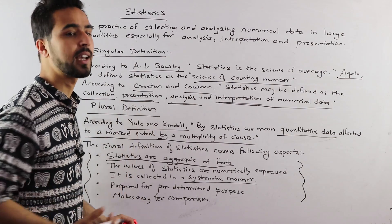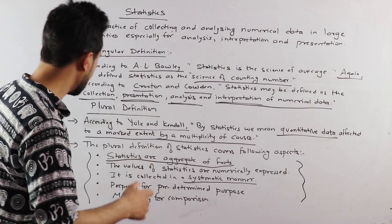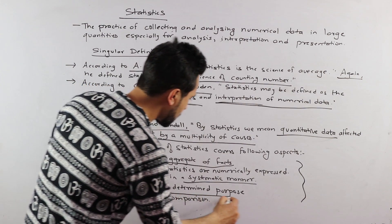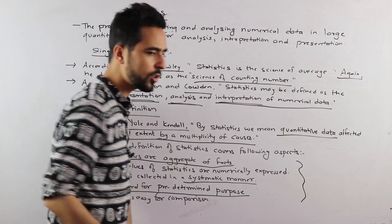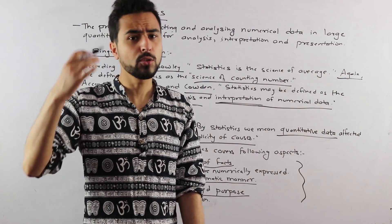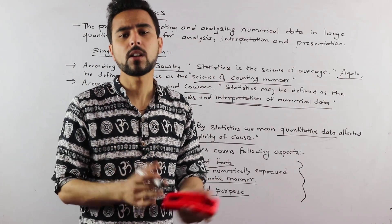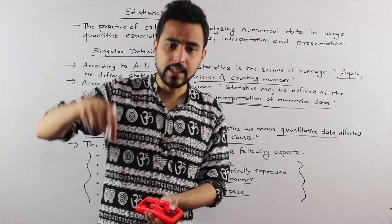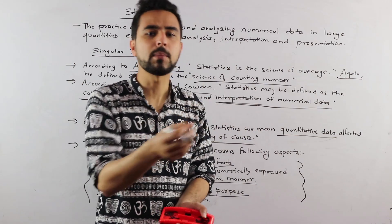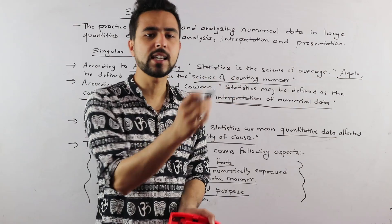In a systematic way, the statistics are collected. Statistics are prepared for a predetermined purpose. This is the first purpose of the data, which has its own purpose. How do you collect the data? Do you collect the data, and how do you collect this work?